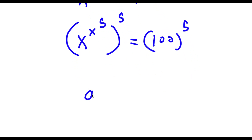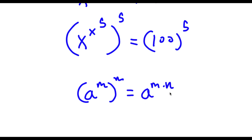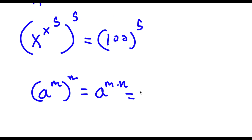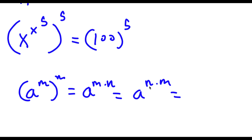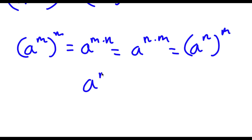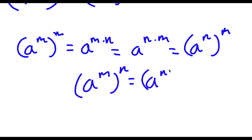Now if I have something in the form a to the power of m to the power of n, this is the same thing as a to the power of m times n. And m and n are interchangeable, meaning this could also equal a to the power of n times m. So in simpler terms, a to the power of m to the power of n is equal to a to the power of n to the power of m.